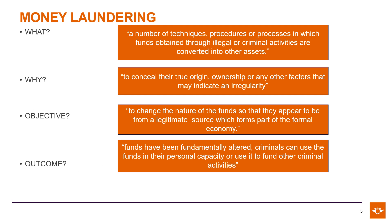Let's have a look at the what, the why, the objective and the outcome of money laundering. What is money laundering? It's a number of techniques, procedures or processes in which funds obtained illegally or through criminal activities are converted into other assets. Why? To conceal their true origin or source. The objective is to change the nature of the funds so that they appear to be from a legitimate source. The outcome is that criminals can use these funds in their personal capacity to fund other criminal activities.